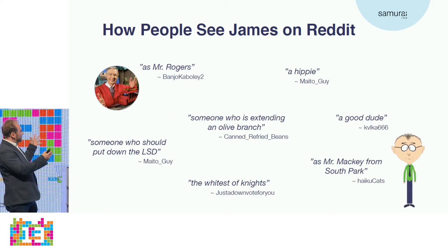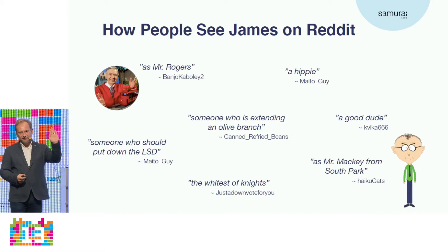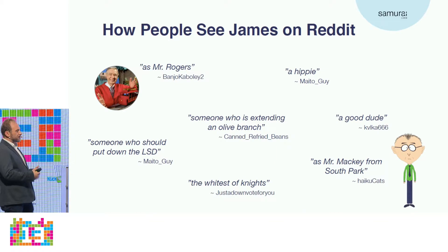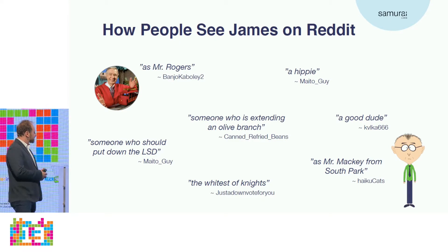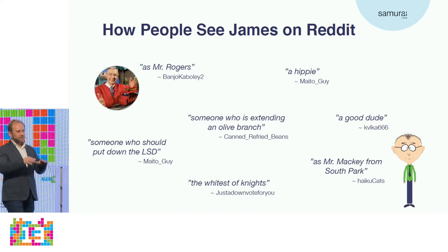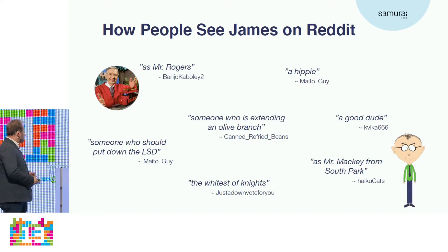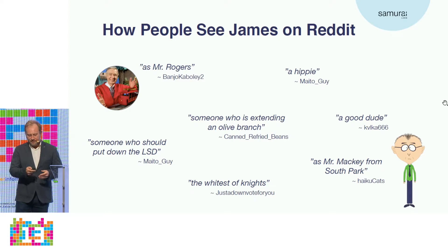This is how people actually see James — our artificial intelligence on Reddit. Some people see him as a hippie because he's so kind, comparing him to Mr. Mackey from South Park, Mr. Rogers, or a knight of good. Because we constantly ask people to be kinder, some have said we should take the LSD out of our system.